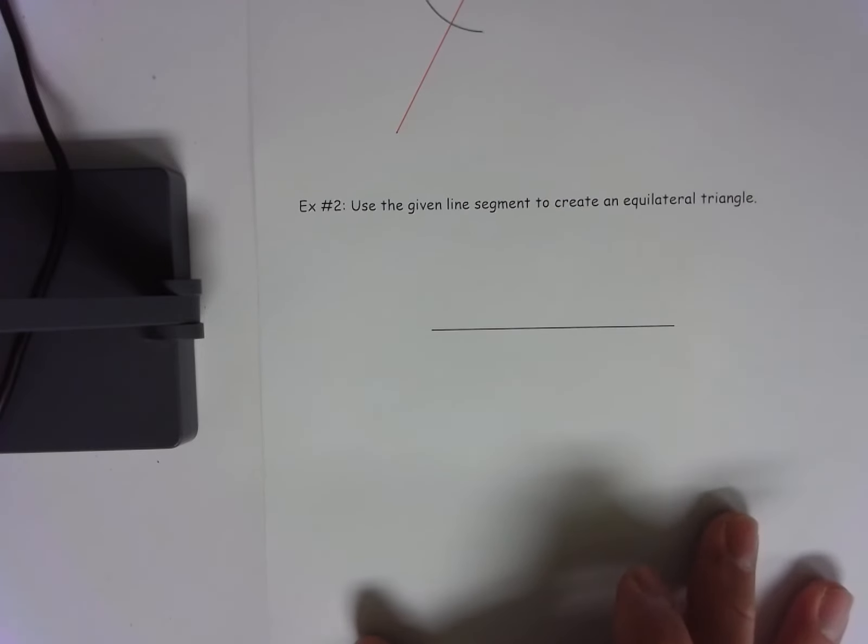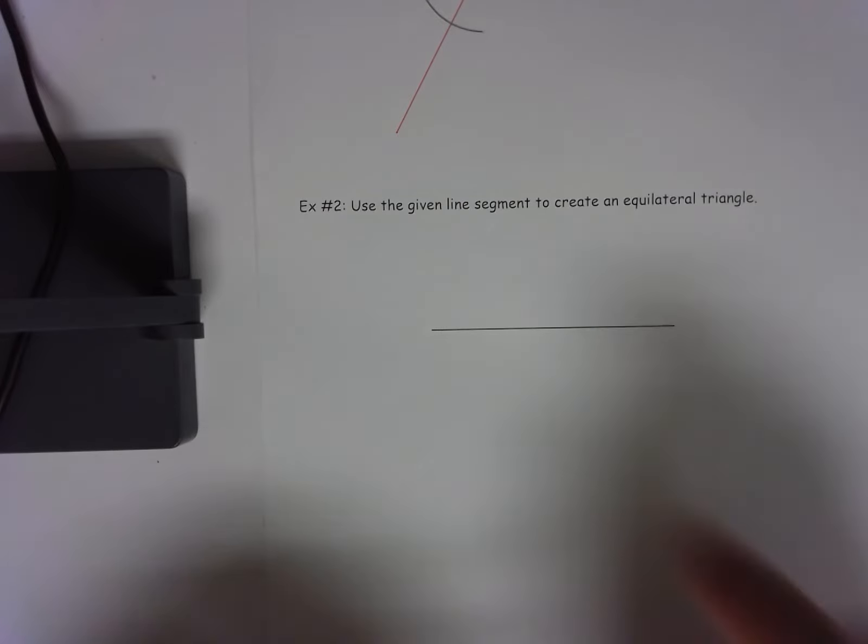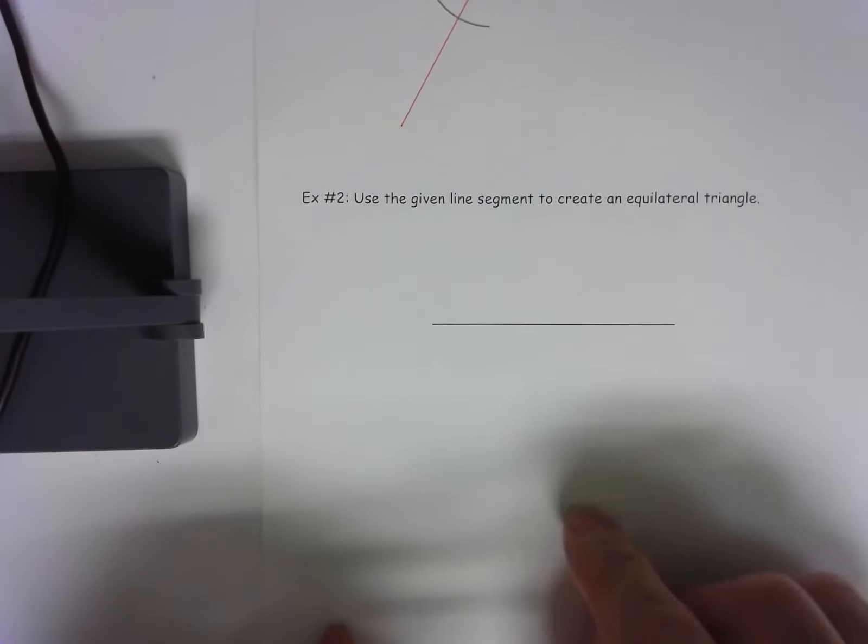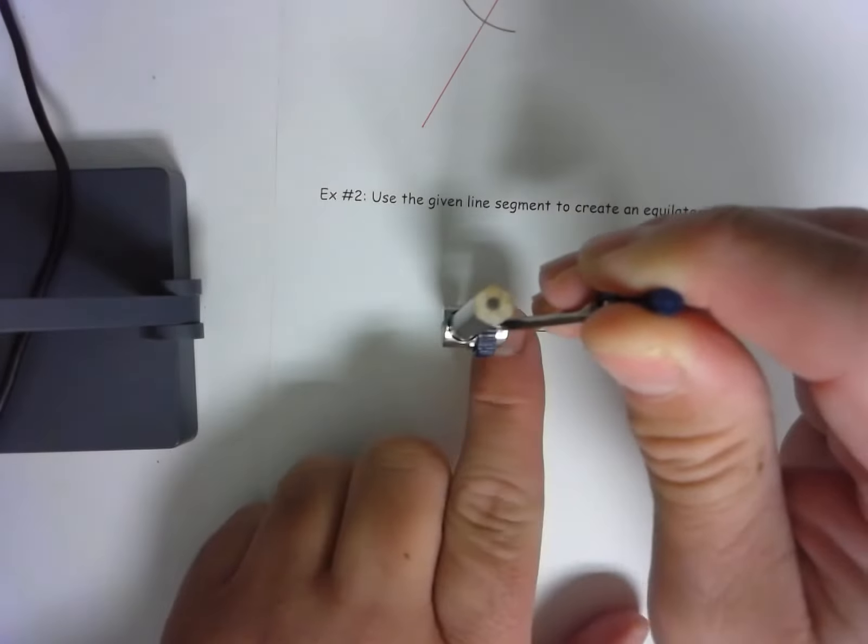The second thing I want to talk about today is creating an equilateral triangle. Well, an equilateral triangle means all the sides are the same length, so it would be like taking this and having one here and here. So we're going to use our knowledge of copying a line segment.